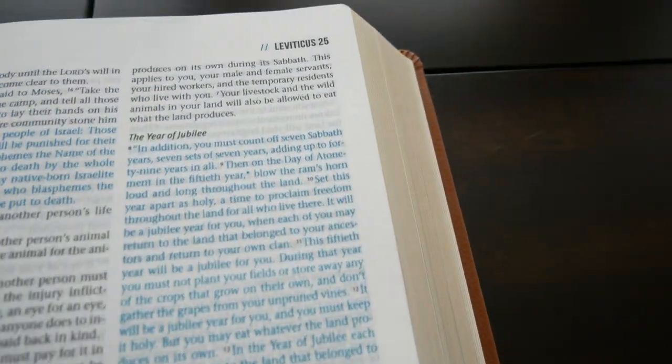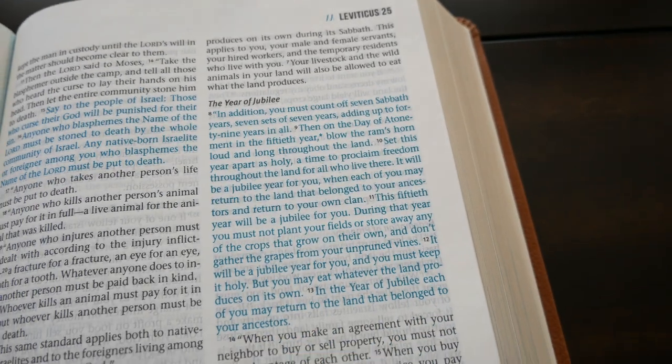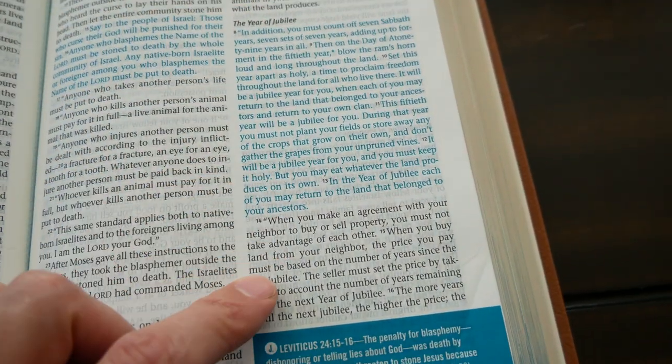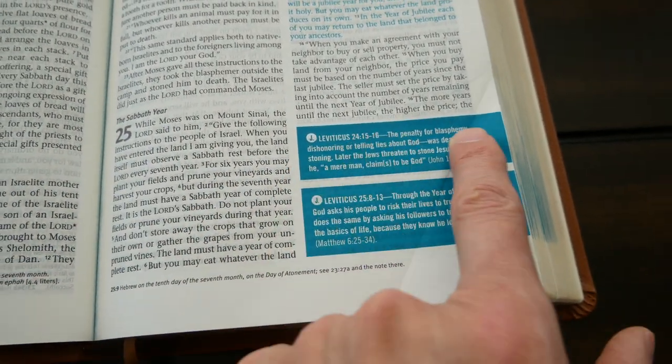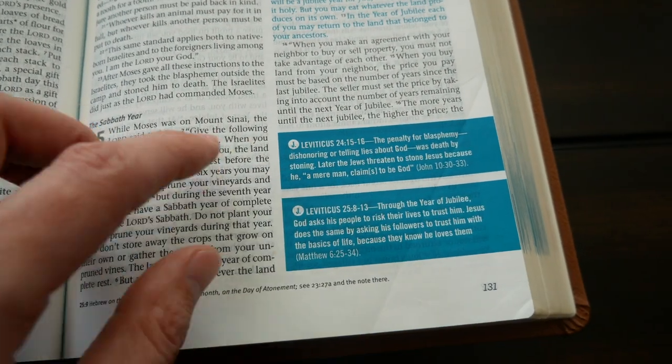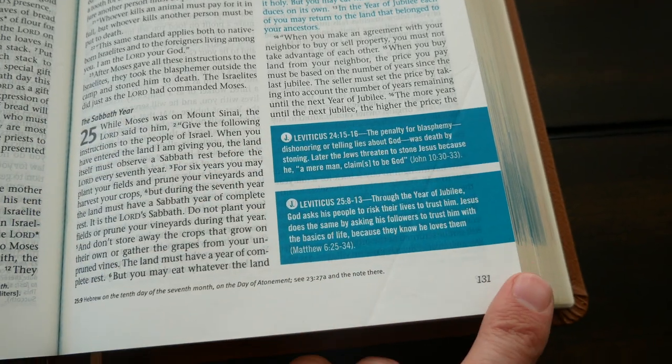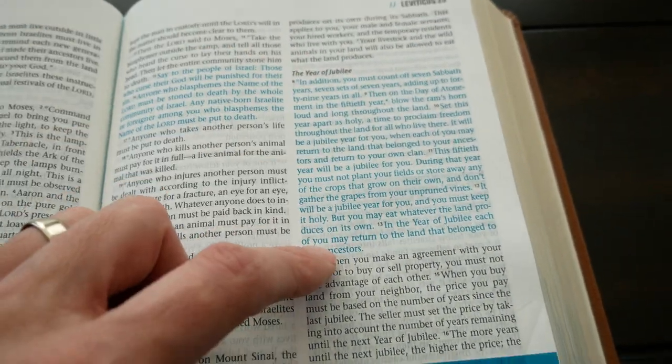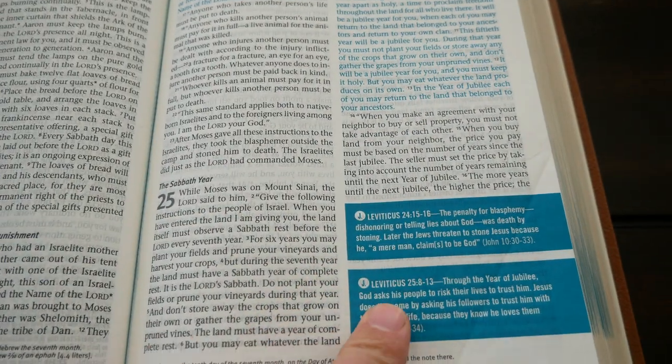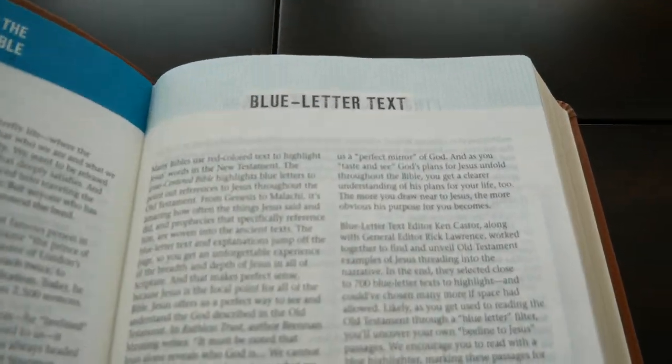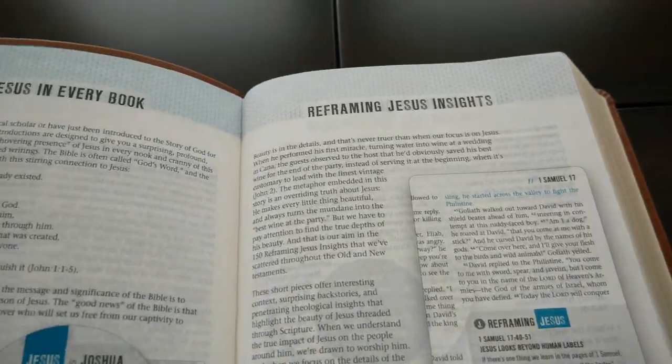Let me show you. Like, for instance, here in Leviticus, you have the blue in a passage that points to Jesus. And then you have the explanation in this little blue rectangle with white letters just explaining why they rendered this passage in blue and how it relates to Jesus. So, really cool. So, blue-letter text, that's one of the great features of this Bible.